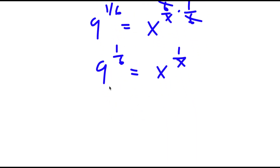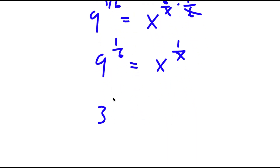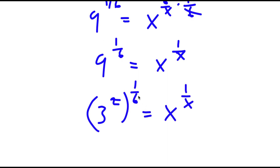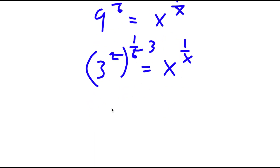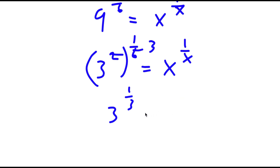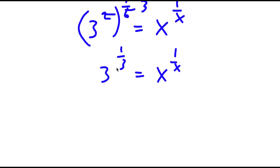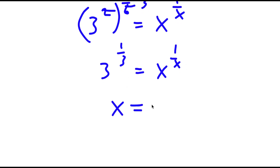Now, 9 is the same thing as 3 squared, so I get 3 squared to the power of 1 over 6 is equal to x to the power of 1 over x. 2 and 6 make 3, so I get 3 to the power of 1 third is equal to x to the power of 1 over x. Notice how this is in the form of a number to the power of 1 over that same number, equal to x to the power of 1 over x — meaning x is simply equal to 3.